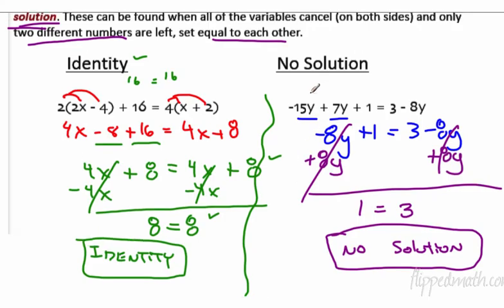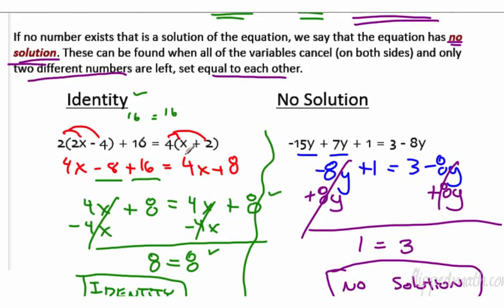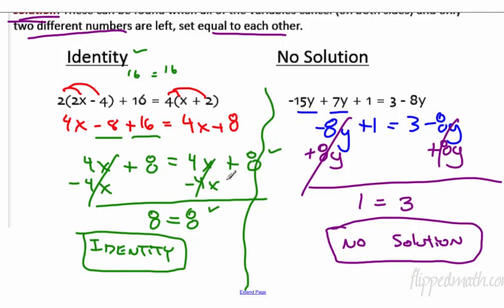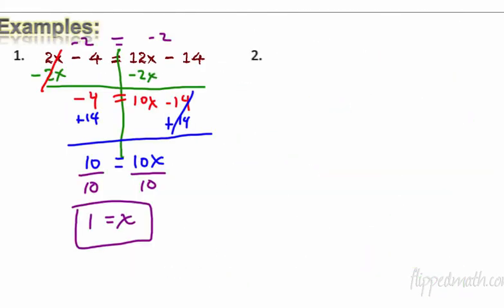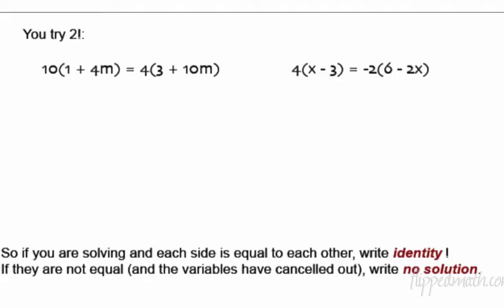The shortcut: you're solving along, and all the variable terms cancel out — no more variables. If the remaining numbers are the same, write identity. If they're different, write no solution. It's that simple. For the other problems we did, I didn't write no solution or identity because those had actual numerical answers.